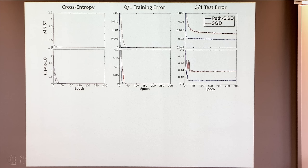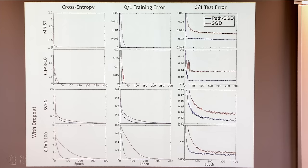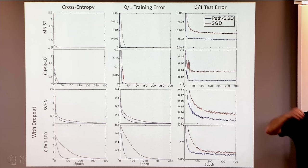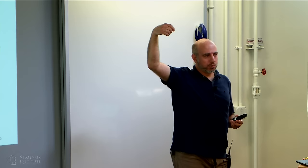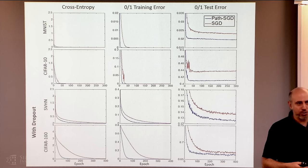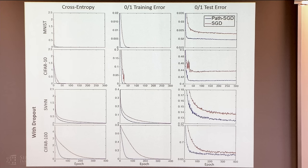By changing the optimization algorithm, we didn't just change how well we minimize the objective — we changed the implicit bias. Think of it as: we have a way underdetermined problem with many global minima — an ocean at zero error. We start on some mountain, and local search guides us down until we reach the global minimum. Which global minimum we reach depends on the geometry guiding the local search. The capacity control comes from the fact that our effective capacity is everything inside the neighborhood we actually reach with local search.